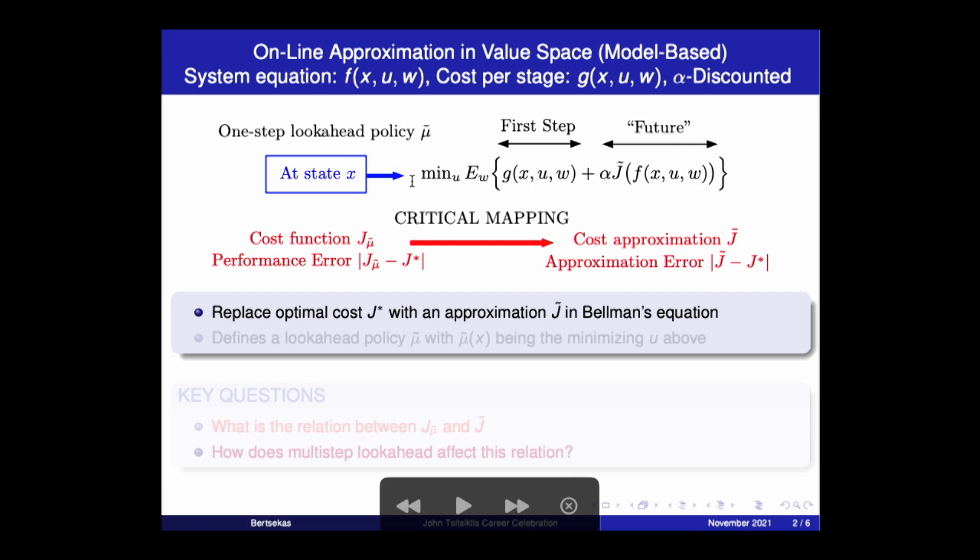So basically, at any state that we are, we minimize the weighted sum, the sum of two components: the cost of the first step, and then the future as approximated with this J tilde. And W here is a random value. So there's an expected value with respect to W. If there's no randomness, then you don't need this expected value. Now, this is a model for much of reinforcement learning.